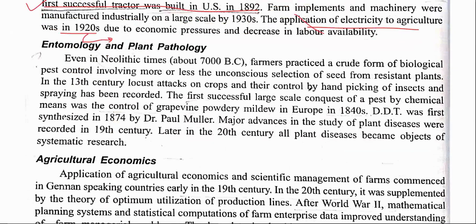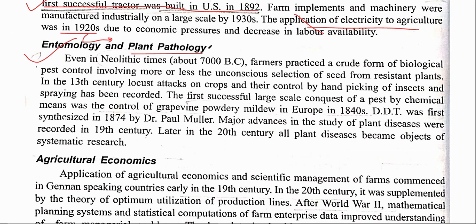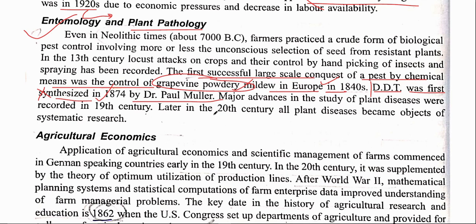In entomology and plant pathology, the first successful large-scale control of a pest by chemical means was of grapevine powdery mildew caused by Plasmopara in Europe. Regarding DDT: its insecticidal properties were discovered by Paul Müller, but it was synthesized by Othmar Zeidler — these are two different contributions that will be discussed further.